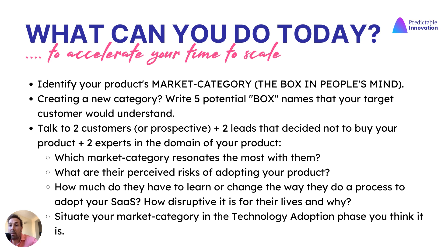Understand the perceived risks of adopting your product — risk aversion is a cornerstone of our scale acceleration strategy. Learn how much your customer needs to learn or change their behavior or process to adopt your SaaS, and how disruptive it is for their lives and work. Then understand where in the technology adoption lifecycle your product's market category currently sits. This reflection is the foundation for the next chapters, where we'll learn how to sell to the early majority and accelerate time to scale.